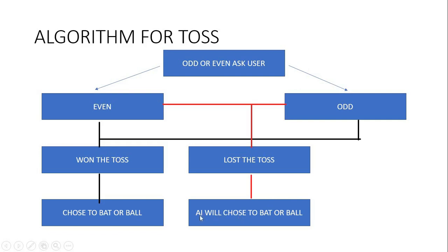If the user chooses even, it's similar—almost the same. If they win the toss, they can choose to bat or ball. If they lose the toss, the AI will choose to bat or ball.